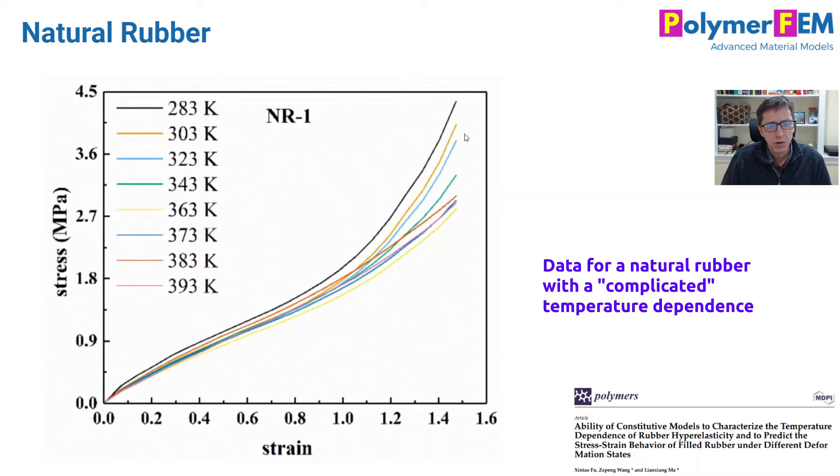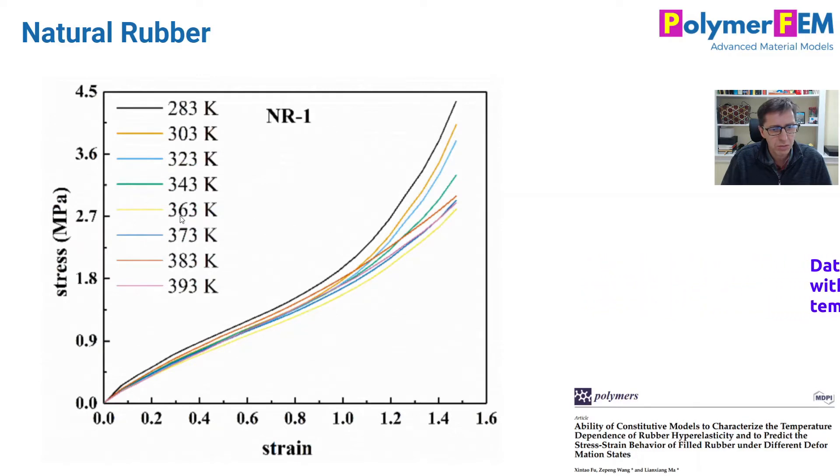After all, the lowest temperature is the stiffest and then it softens, but then the line with the lowest stress, the yellow one, is kind of in the middle. Like what is this? What is going on with this data? And this is pretty common when you do testing on rubbers to get data that looks like this. And it also often causes some confusion about is this good data, is there a quality issue.